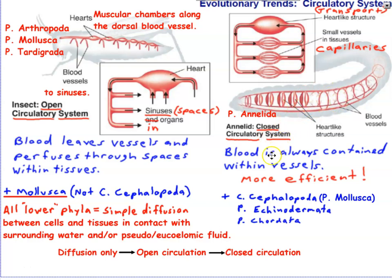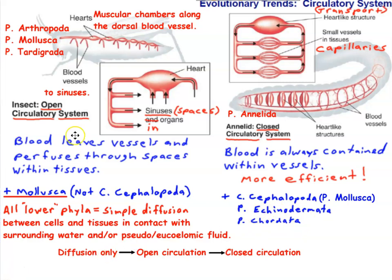Annelida and cephalopod mollusks have closed circulation, which is more efficient. This carries on to Echinodermata and Chordata, which includes humans. Animals with open circulation don't need anything more efficient — in evolution, whatever works stays, and natural selection won't eliminate it if it works. Notably, annelids were also the first to evolve hemoglobin in their blood — both closed circulation and hemoglobin were likely responses to living in low-oxygen environments, enabling more efficient oxygen transport.